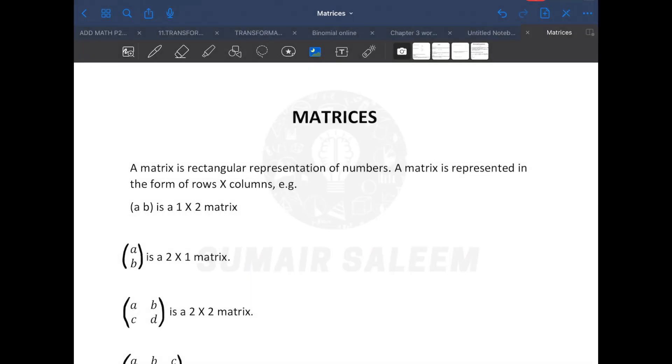Hi guys, in today's lesson I'm starting a topic called matrices. What is a matrix? It is a rectangular representation of numbers. A matrix is represented in the form of rows into columns. For example, I need to write down the order of the matrix. What's the order of the matrix? It's rows into columns.